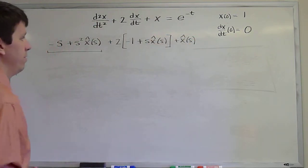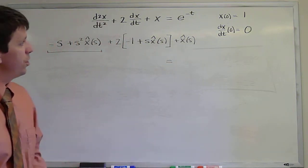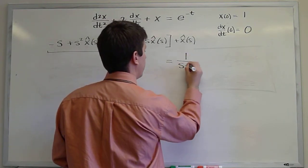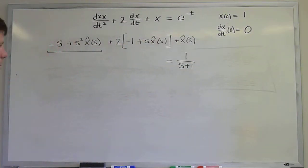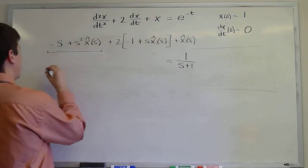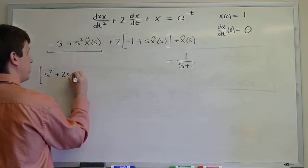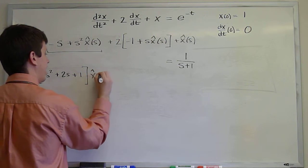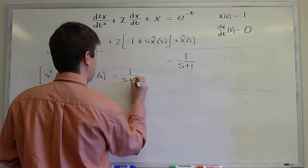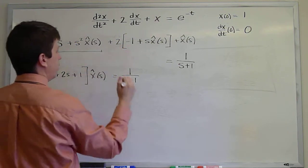That's the Laplace transform of the left-hand side. And what do we get on the right-hand side? From a table or from class notes, the Laplace transform of e to the minus t is 1 over s plus 1. So the goal now is to solve for x hat of s. We have three terms there, and if we collect them all, we get s squared plus 2s plus 1 x hat of s. And then everything else goes on to the other side, equals 1 over s plus 1, plus s plus 2.